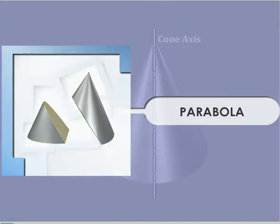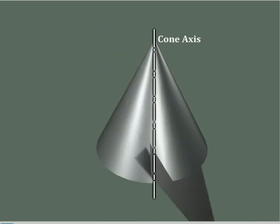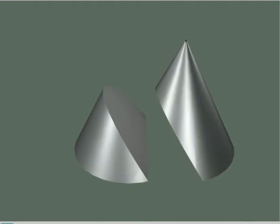Parabola. When the section plane is parallel to one of the extreme generators of the cone, we can get a parabola as the conic section.